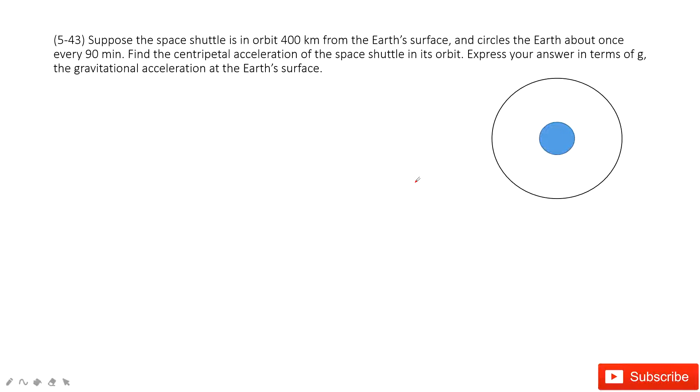In this one, we need to find the centripetal acceleration for the space shuttle around the earth. First thing that tells you the distance from the earth's surface to the shuttle. So it is this one, 400 kilometers.